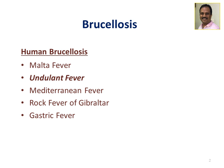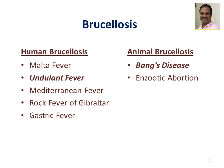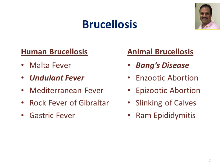The same brucellosis in animals is called Bang's disease, or it's also known as enzootic abortion, because it may cause abortions among the animals. It's also known as epizootic abortion, slinking of calves, ram epididymitis, and contagious abortion. These are all different names for the same disease in human beings as well as in animals.